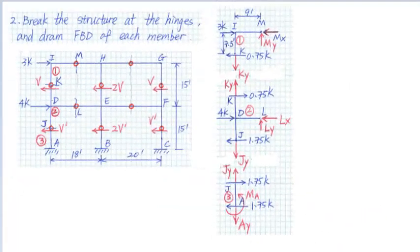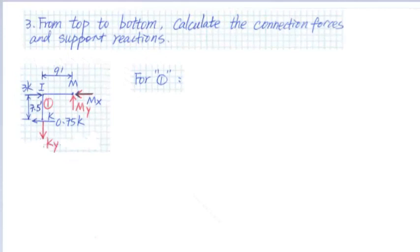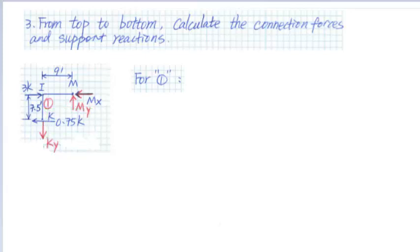Next, we need to break the structure at the hinges and draw a free body diagram of each member. There are two connection forces at each hinge. Then, working from the top down, we will calculate the connection forces at the hinges and support reactions. For member 1, we know that the lateral force in column ID is 0.75 kips, so the connection force Kx equals 0.75 kips. There are three unknown connection forces for member 1, and we can solve them using the equations of equilibrium.